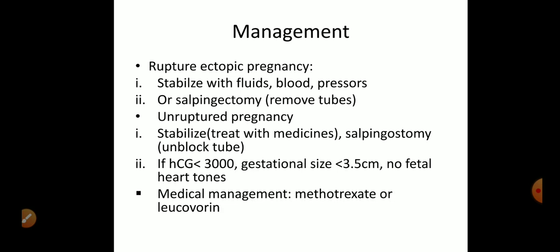For a ruptured ectopic pregnancy, first we stabilize the patient with fluid resuscitation. Blood transfusions are given to raise blood pressure. Then we surgically remove the tube — this is called salpingectomy. If it is a ruptured tubal pregnancy, the tube is removed.